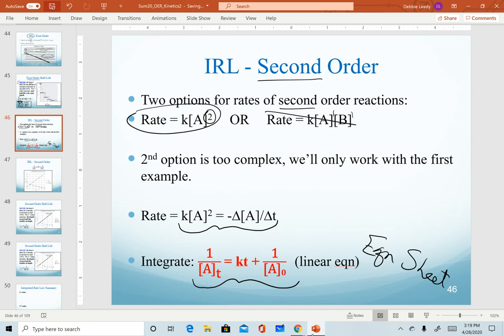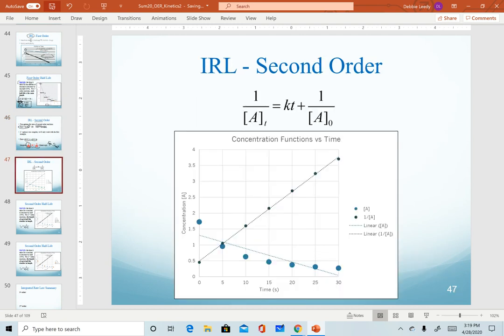And realize that in our linear equation, it means that we've taken a different function of concentration to get a straight line. For first order, we had the natural log. For second order, we take the inverse of concentration to get a linear equation.